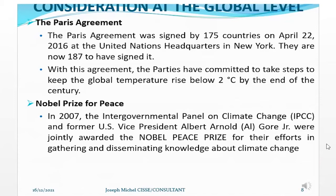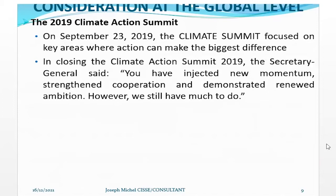Nobel Prize for Peace: In 2007, the Intergovernmental Panel on Climate Change (IPCC) and former U.S. Vice President Albert Arnold Gore Jr. were jointly awarded the Nobel Peace Prize for their efforts in gathering and disseminating knowledge about climate change. The 2019 Climate Action Summit: On September 23, 2019, the climate summit focused on key areas where action can make the biggest difference. In closing, the Secretary General said: 'You have injected new momentum, strengthened cooperation, and demonstrated renewed ambition; however, we still have much to do.'